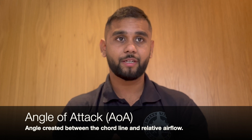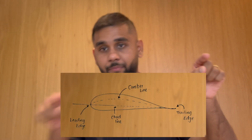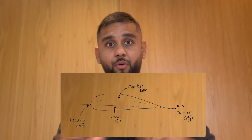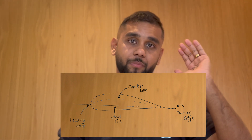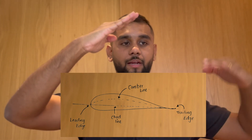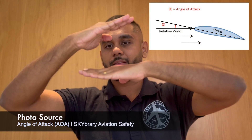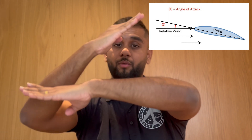Let's now move to angle of attack. If you take the aerofoil, mark the leading edge and trailing edge, then draw a straight line connecting those two points — that's called the chord line. The chord line is the straight line from the leading edge to the trailing edge. If a gust of air approaches the aerofoil, the angle between that incoming air and the chord line is called the angle of attack.